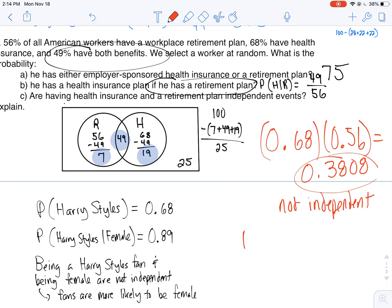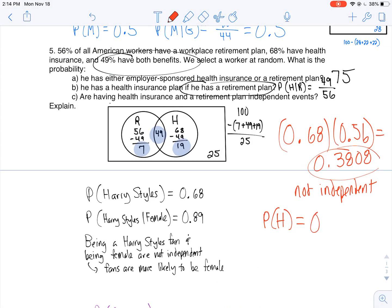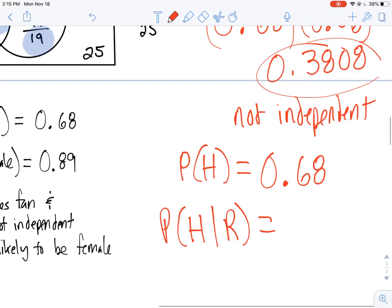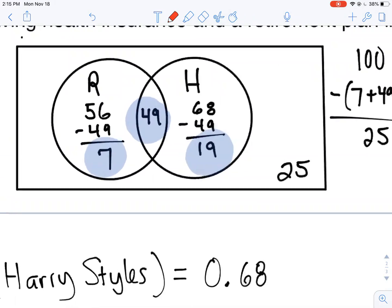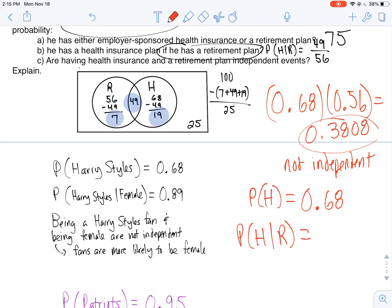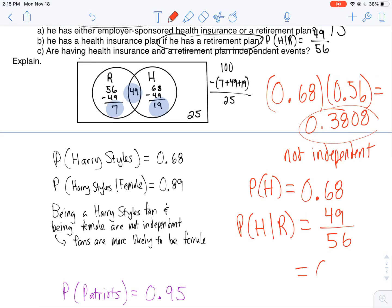Another way: let's look at the probability of having health insurance. Probability of having health insurance is 68. Again, when they're asking about the probability of having health insurance, you can have both. They're not saying only. Now let's see the probability of having health insurance given that I have a retirement plan. I'm looking at those with the retirement plan, which is 56, and then those who have health insurance, it's gonna be 49. 49 divided by 56: I do not get 0.68. As a matter of fact, I get 0.875, which tells me they aren't independent.